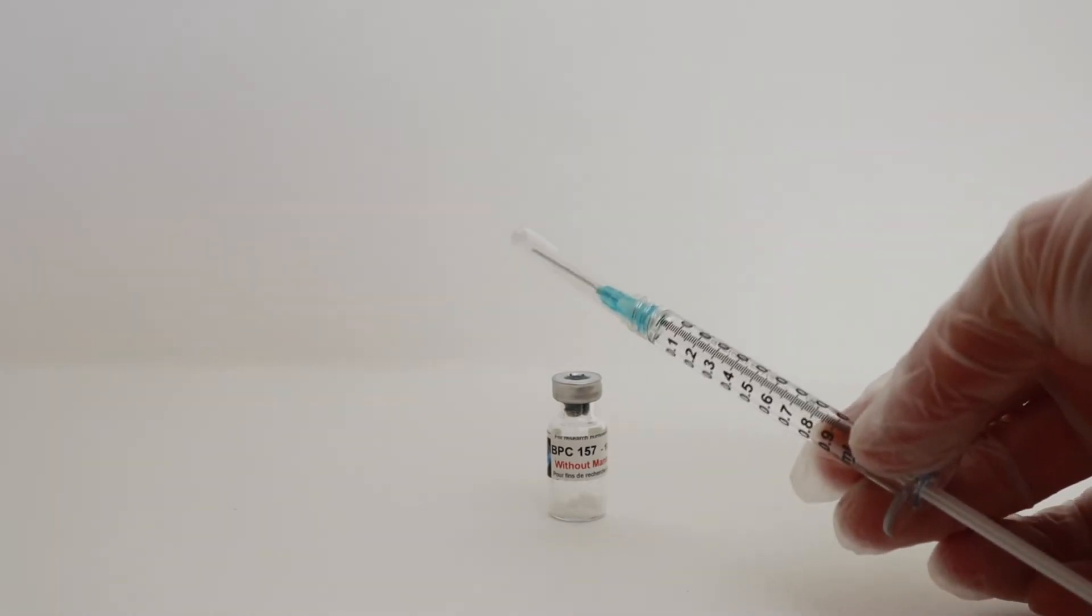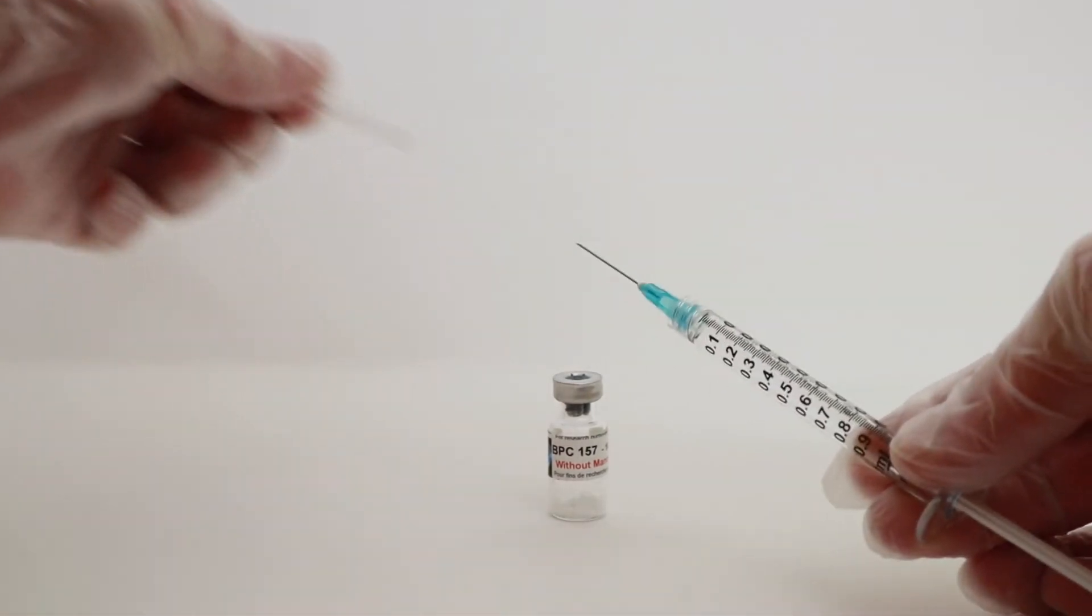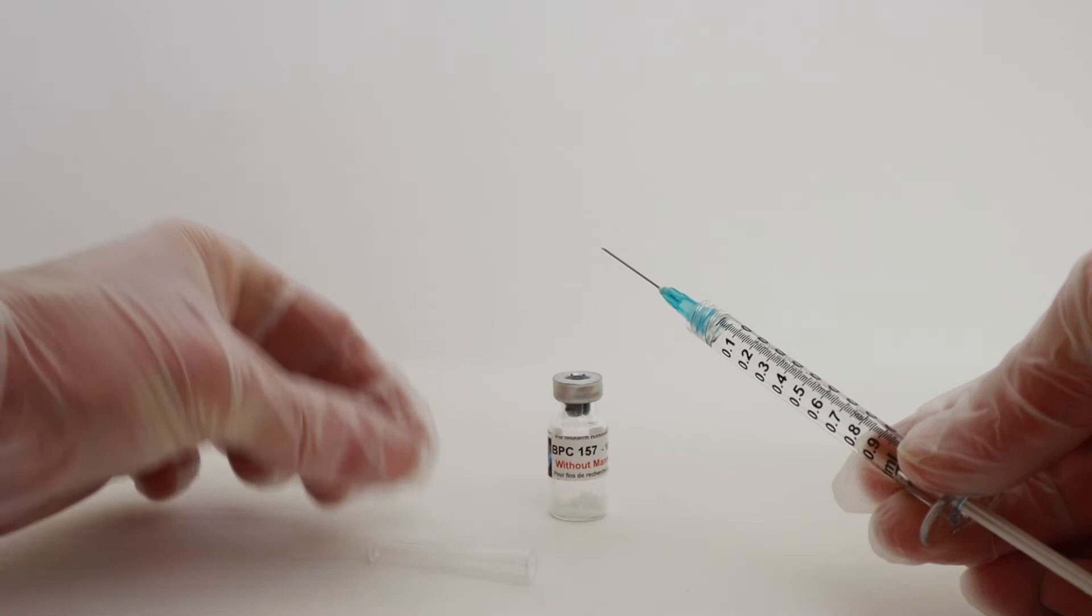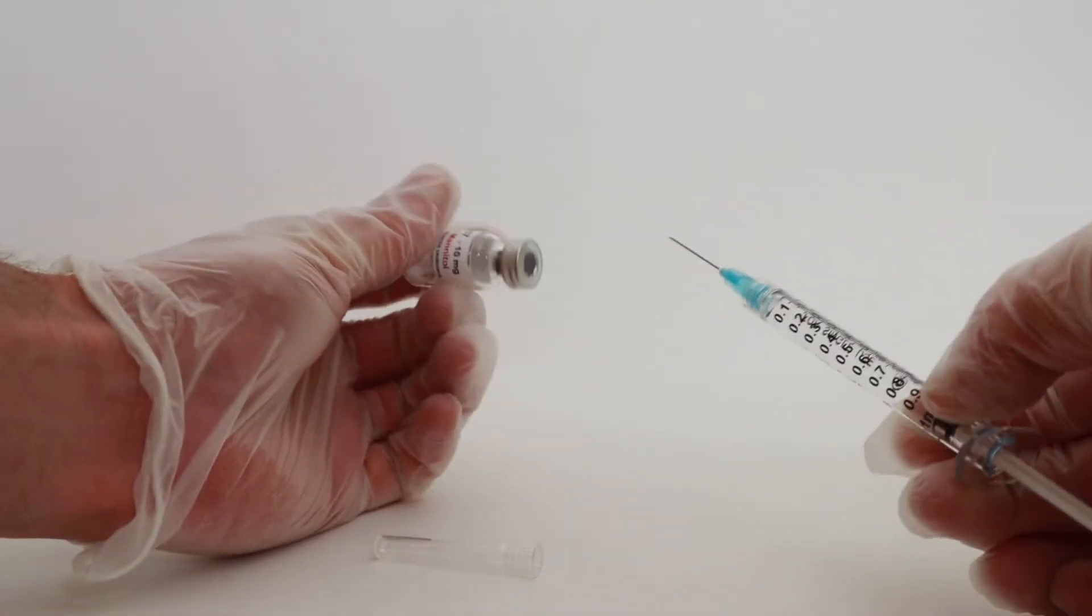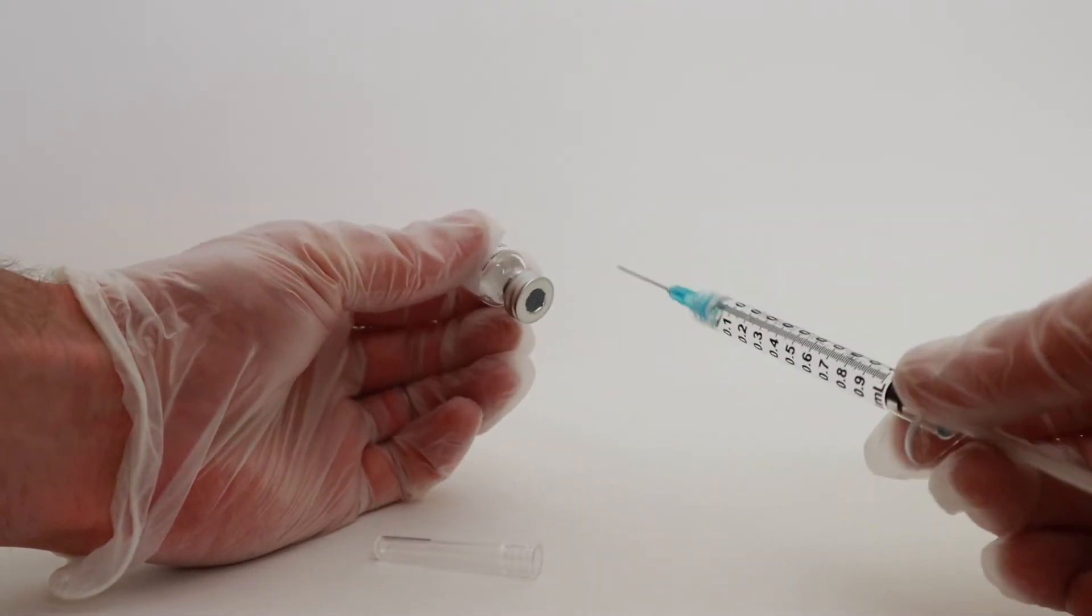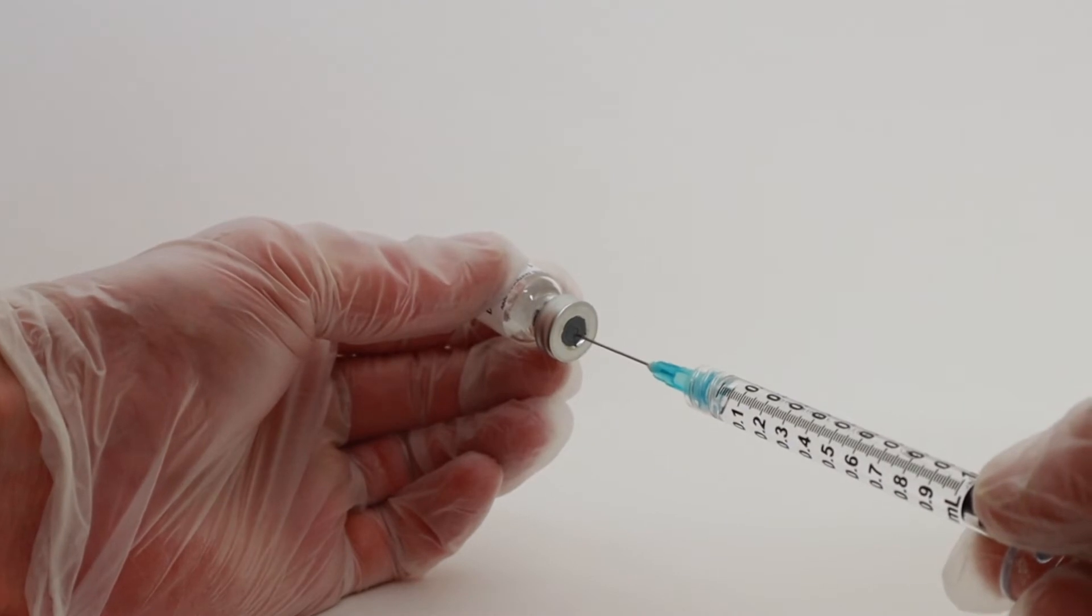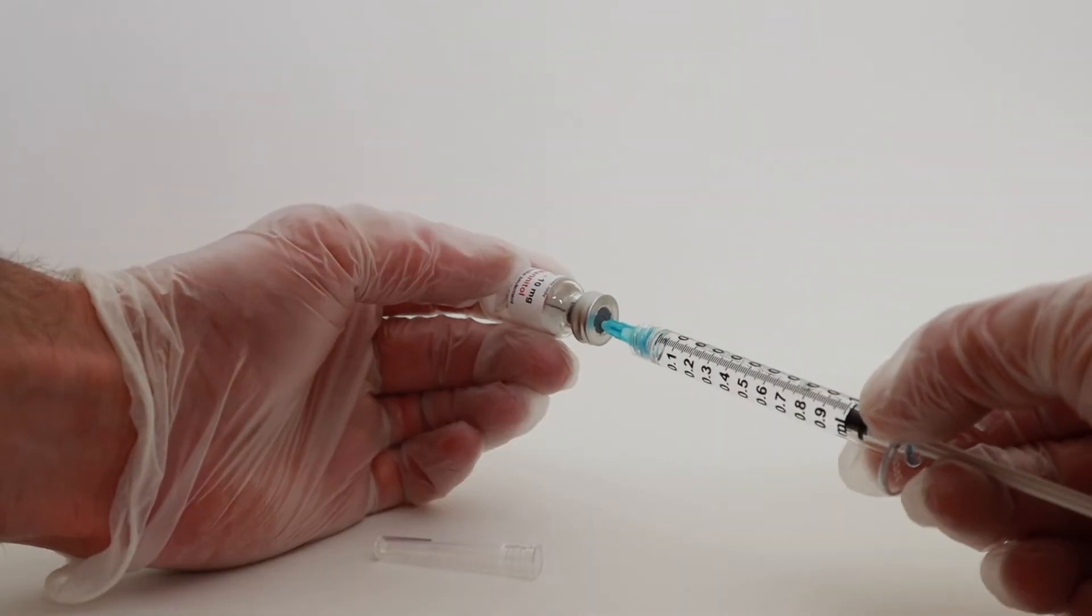Now to inject it into the peptide. Remove the cap. Hold the peptide in your non-dominant hand and slowly insert the mixing syringe.